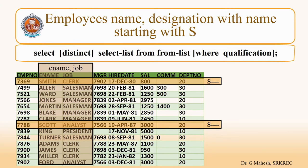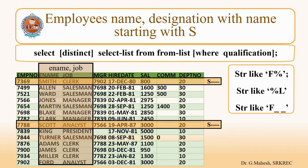Now let us see a query where we want employee names and designations with names starting with the letter S. We don't know the other characters, but the string starts with S. For such queries, there are wildcard characters like % and underscore. The % symbol represents an unknown number of characters, and underscore represents one unknown character.